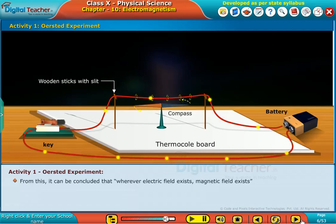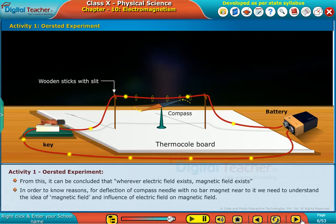From this, it can be concluded that wherever electric field exists, magnetic field exists. In order to know the reasons for deflection of the compass needle with no bar magnet near to it, we need to understand the idea of magnetic field and the influence of electric field on magnetic field.